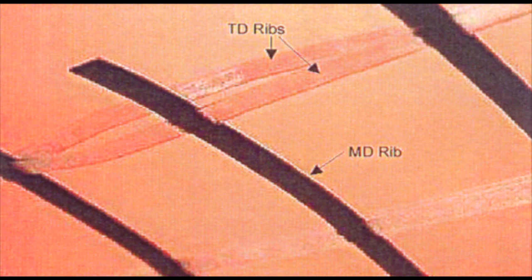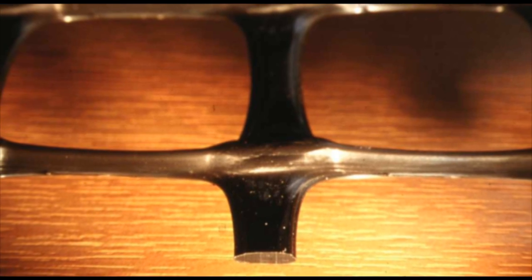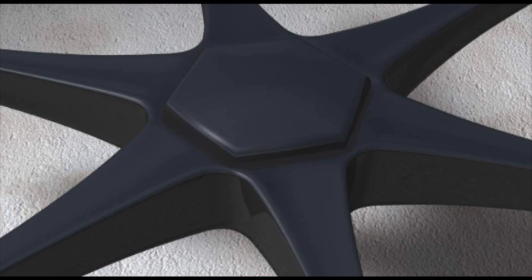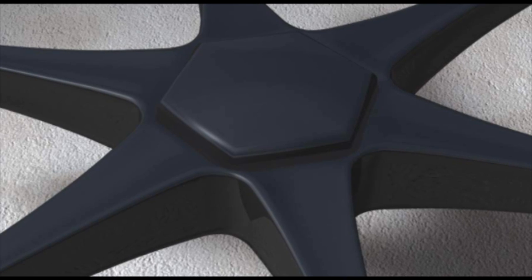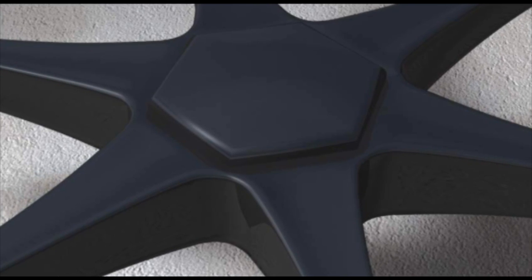A geogrid for a retaining wall will differ to geogrids for roads — it may have more strength in one direction than the other, be more flexible, or come in wider, longer rolls to help with installation. Further, even for geogrids designed for roads there are performance differences, as they are all designed to function in slightly different ways.